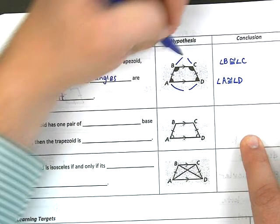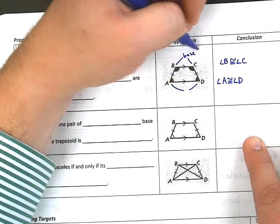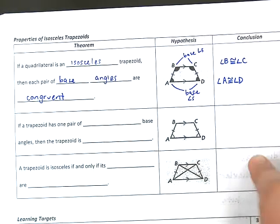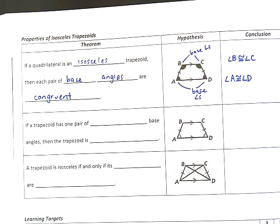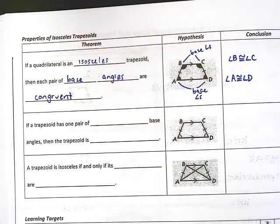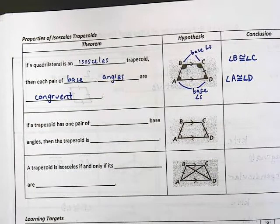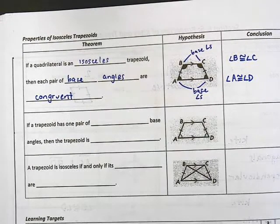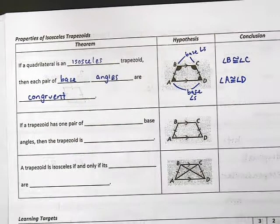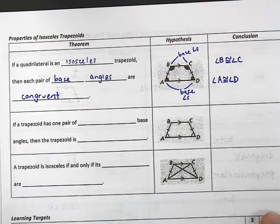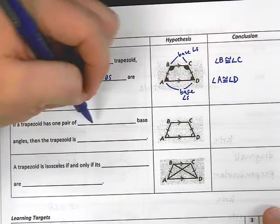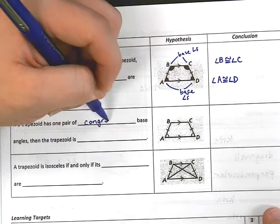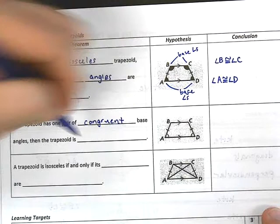Alright, we cannot say that angle A is congruent to angle B. In fact, it's impossible. Then it would be a rectangle. Angle A cannot be congruent to angle B. Alright, if we continue on, if a trapezoid has one pair of congruent base angles, then the trapezoid is isosceles. That's kind of just going backwards. Right? Normally we say if you have an isosceles trapezoid, then the base angles are congruent. Well, now we're just flipping it.